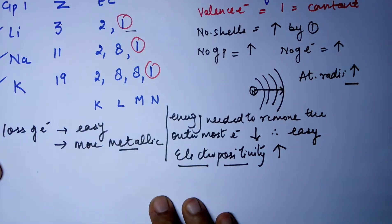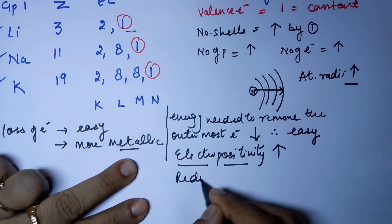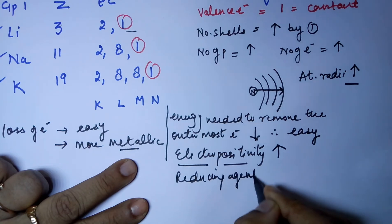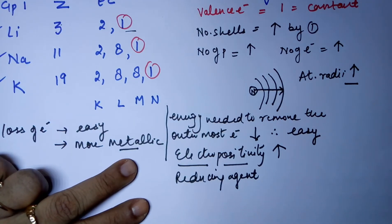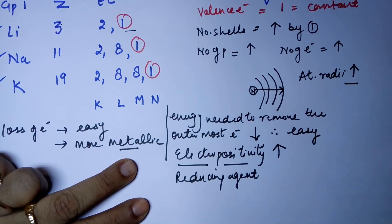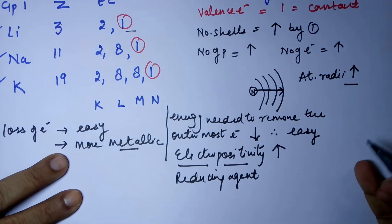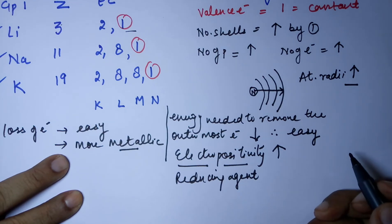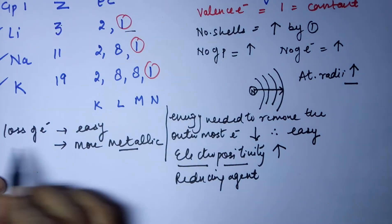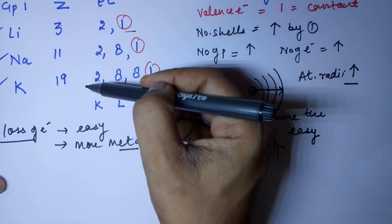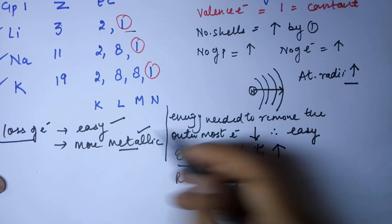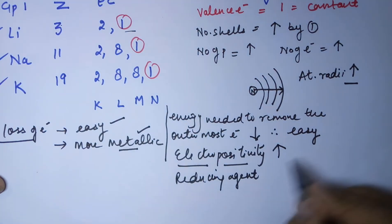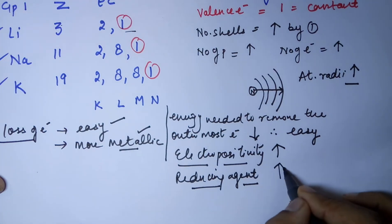The last property is tendency to act as a reducing agent. A reducing agent reduces others - and reduction means gain of electrons. So if an element has to reduce another element, the other element needs to gain electrons, and the element we are talking about needs to give them. A reducing agent is an element which has a tendency to lose electrons. Hence, loss of electrons in these elements becomes easier as you go down the group since they are more metallic and more electropositive, so the reducing agent property also increases.